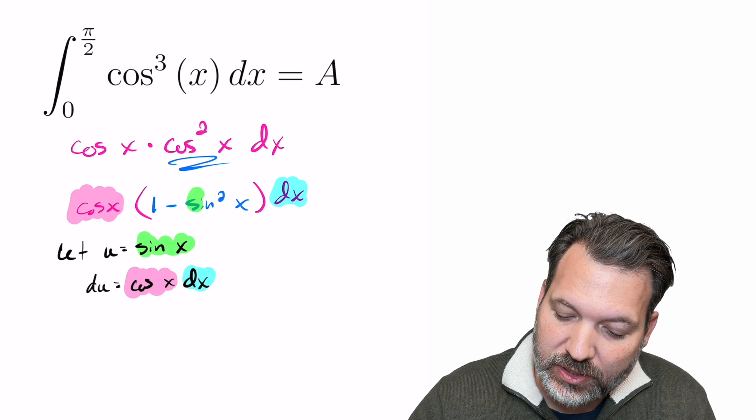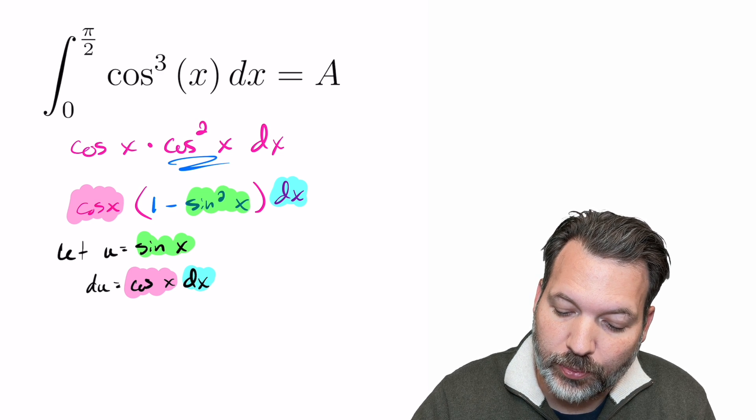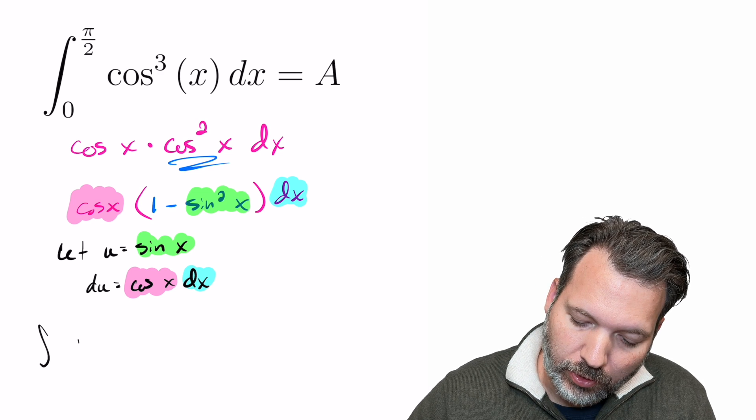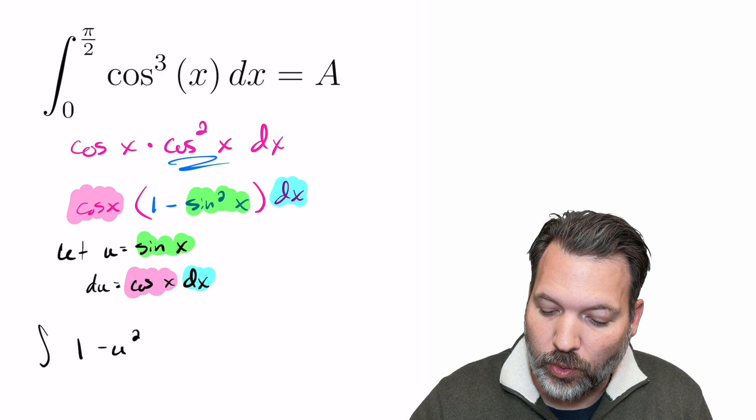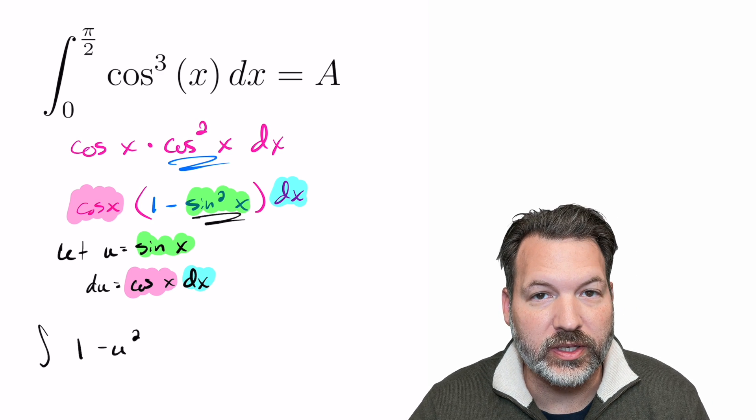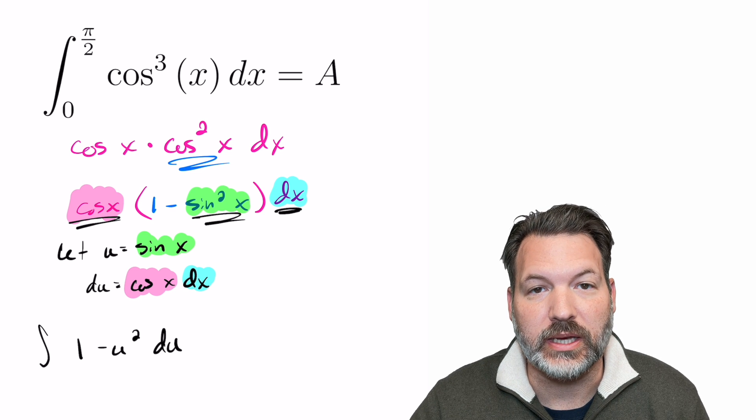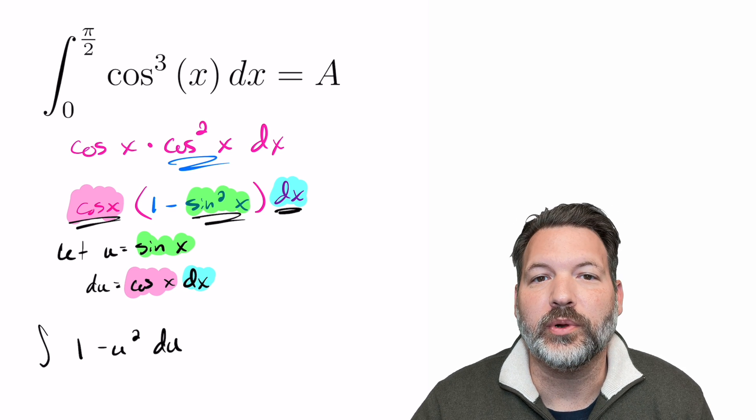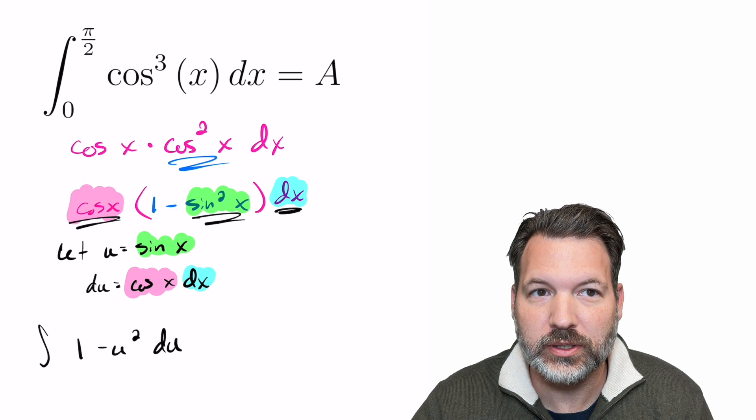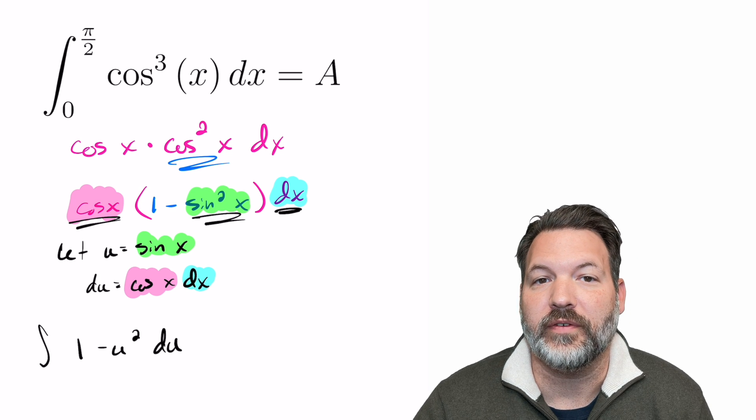Of course, I'll also be substituting the actual sine x here, but now I can write this as the integral of one minus u squared. Again, u coming from the sine x here, du itself. The du being the cosine x dx. But you'll notice that the variable of integration has changed here. So we also need to change the bounds of our integration.